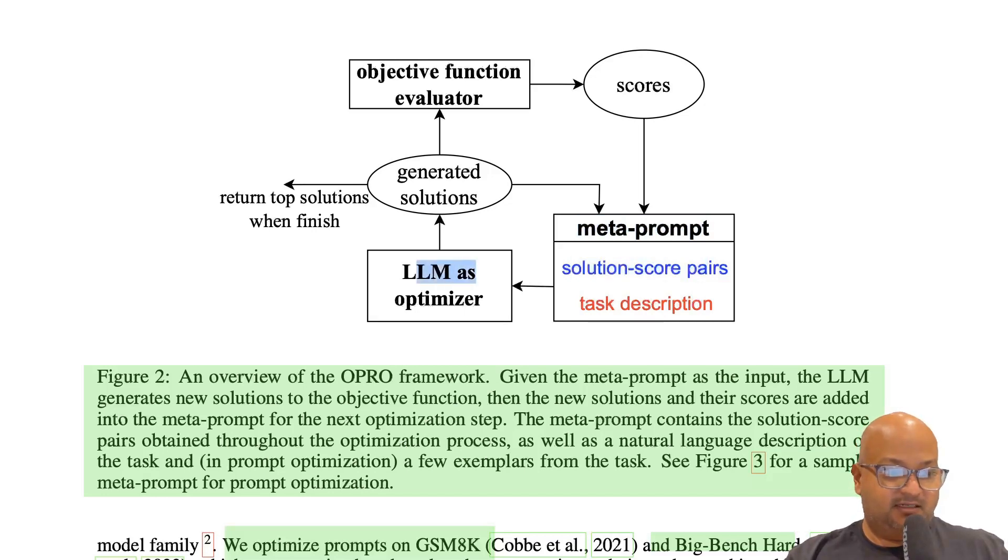This is given to the LLM which generates some solutions as well as their optimality score or how close to the optimum they have come. And these scores are then fed back into the next prompt and you iterate this cycle until you get an optimal score or close enough to optimal.